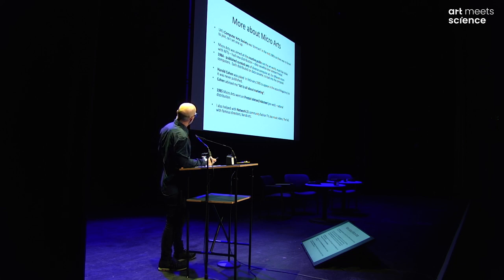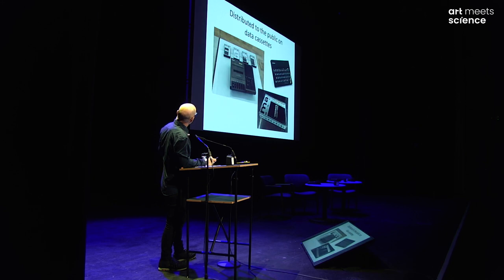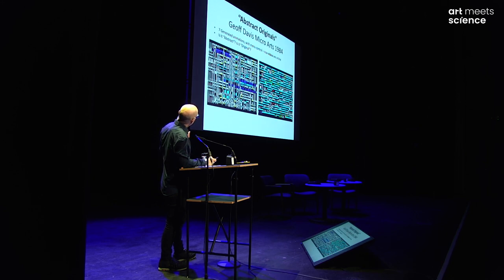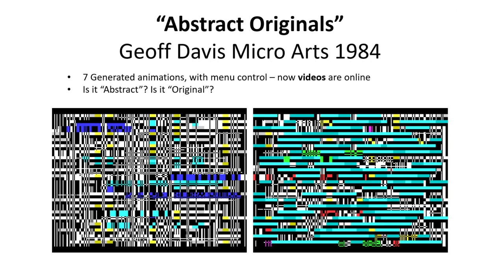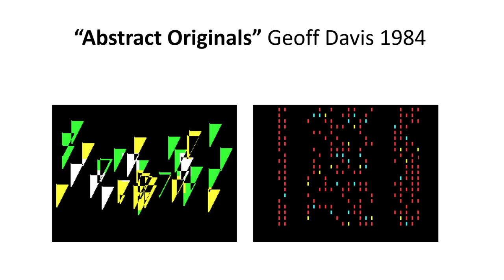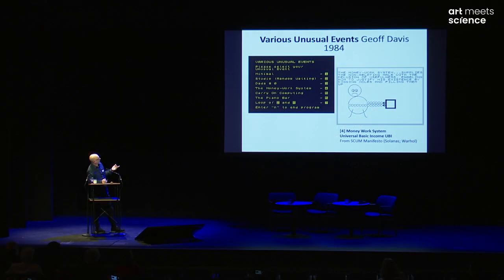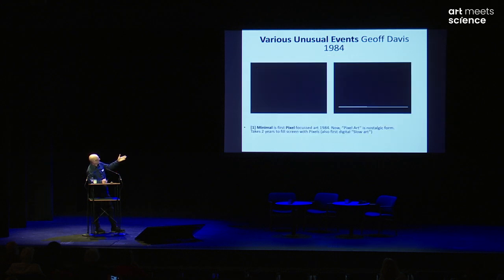In 1985, Micro Arts went on to Prestel. We distributed on data cassettes. There were many different types of generative or algorithmic art. We did programs that were more unusual — animations about UBI, Universal Basic Income, and a pixel program that took two years to run.